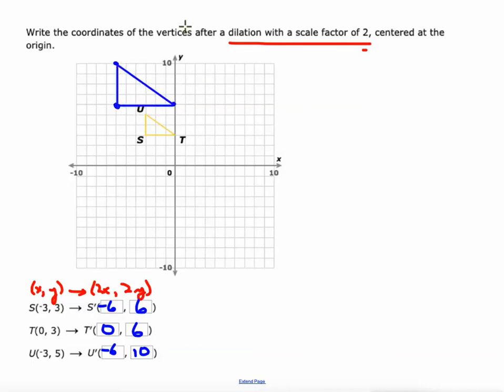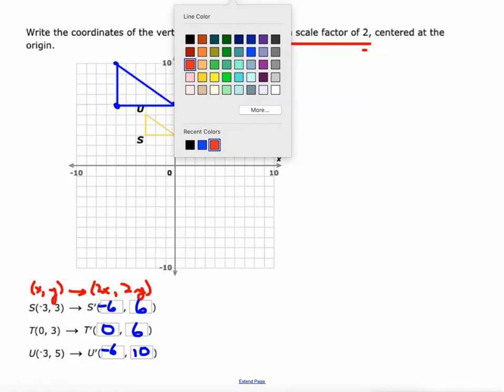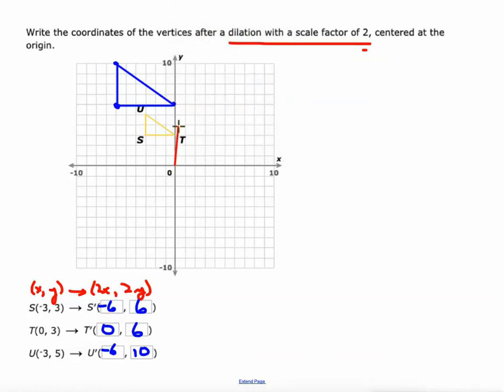Notice it's 2 times bigger. All sides are twice as long. Its area is actually 4 times as large. When we go from origin to the new image vertice, you see these red lines go right through the old vertice as well.